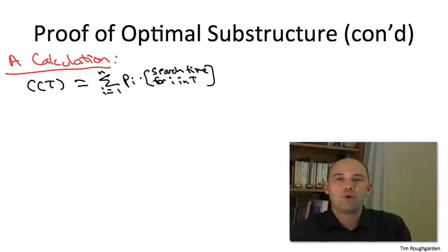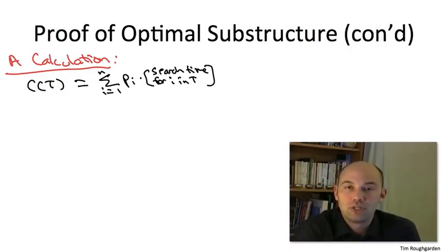So let me now pause to tell you the point of this calculation we're about to do. We start with the weighted search time in T, and that's of course expressed in terms of search times in this tree T. What I want to show next is that can equally well be expressed in terms of search times in the subtrees T1 and T2.